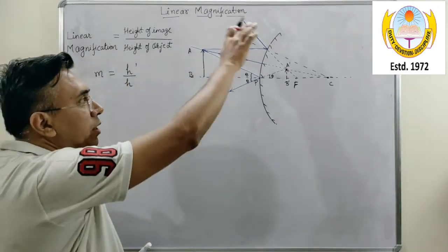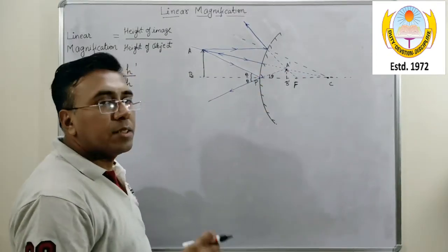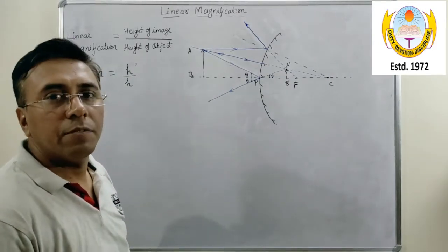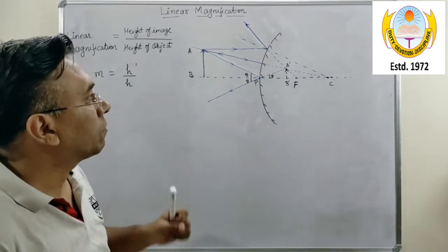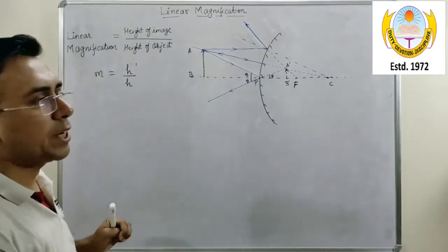Now, the diagram which we are seeing, this ray diagram is the same ray diagram which we have used for the derivation of the mirror formula for the convex mirror. We are using the same ray diagram over here.